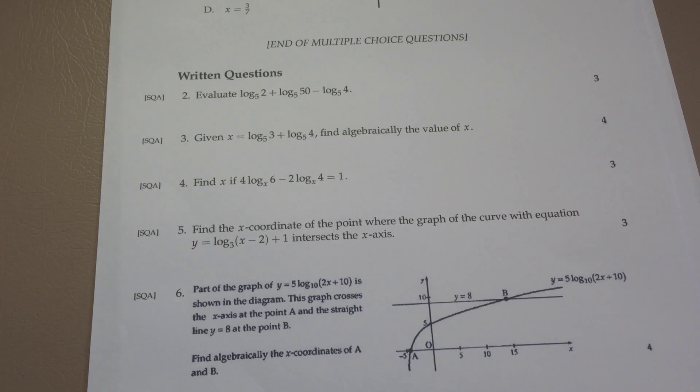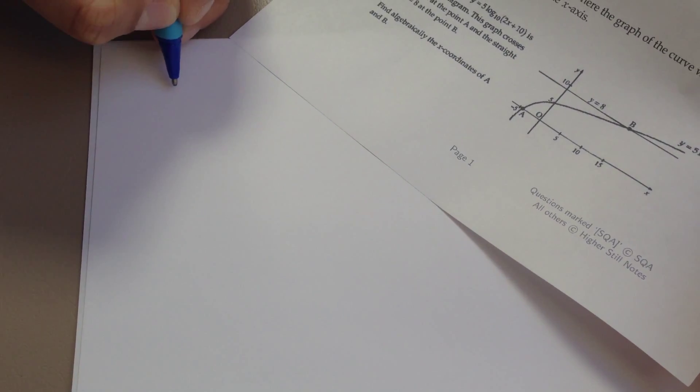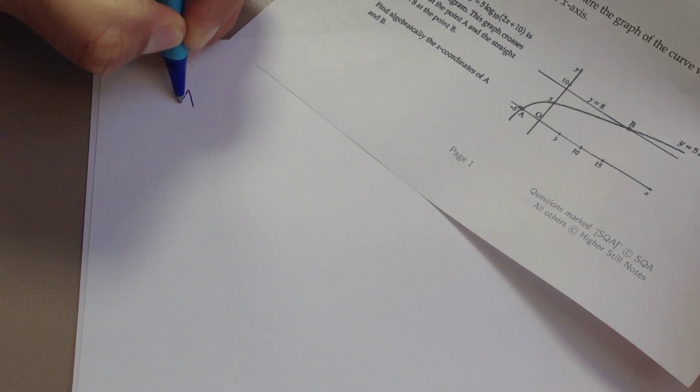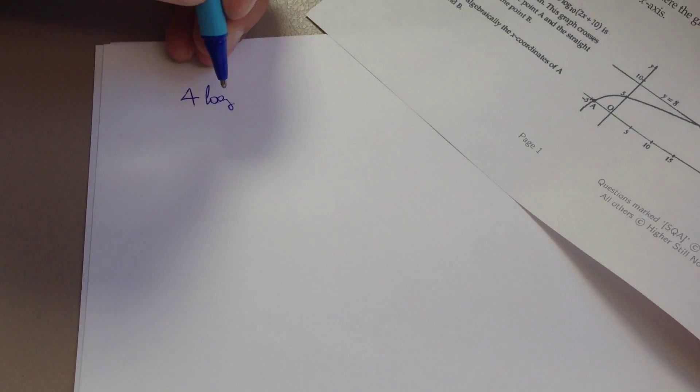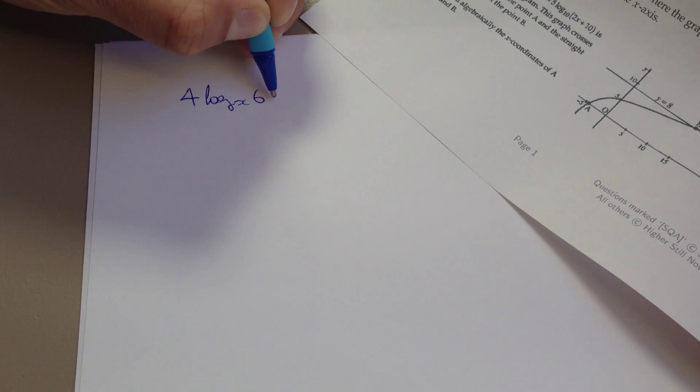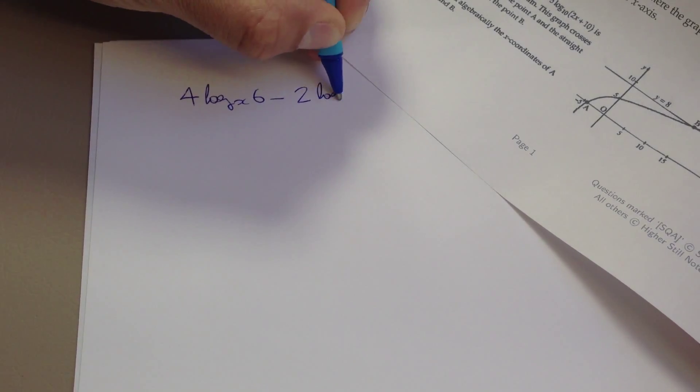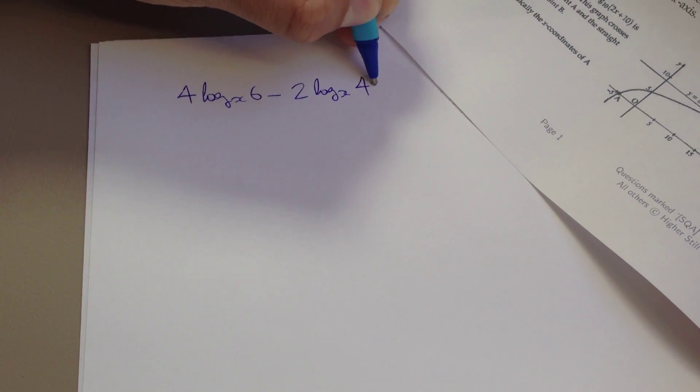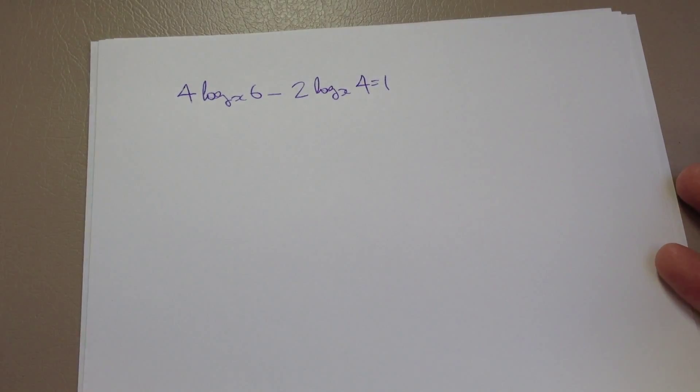Find x if 4 log to the base x of 6 take away 2 log to the base x of 4 equals 1. Let me just copy that question down so we can go ahead and do it.